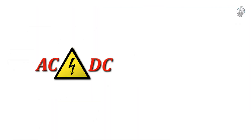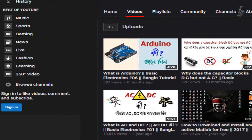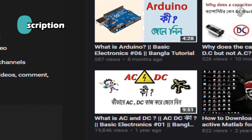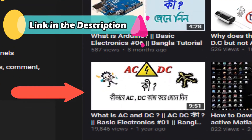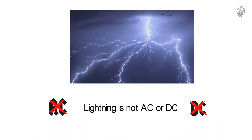Now, to know whether lightning is AC or DC, we first need to know what AC and DC current are. On my channel there is already a video about AC and DC. If you watch it, I hope you will understand what AC and DC are. Actually, lightning is neither AC nor DC. So let's see why it is not AC or DC.